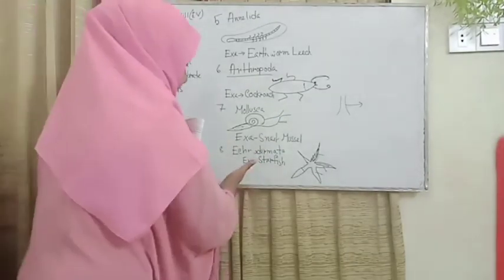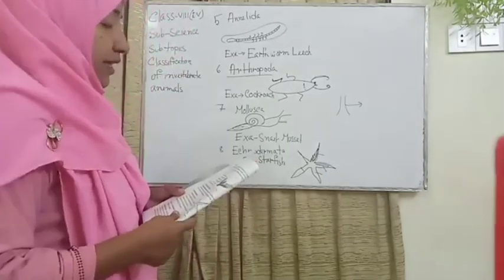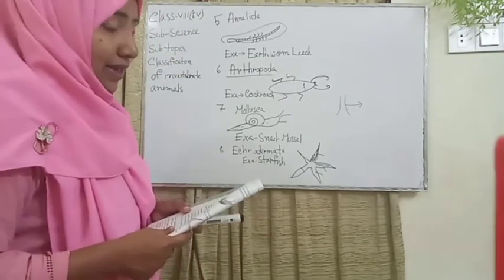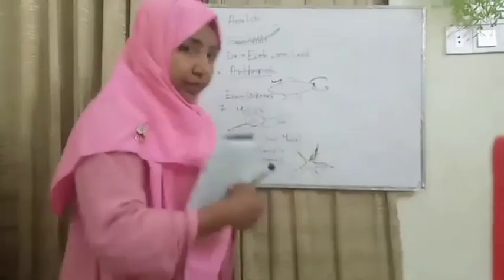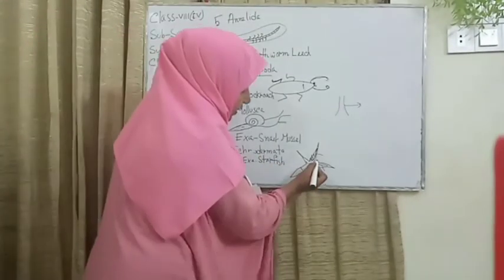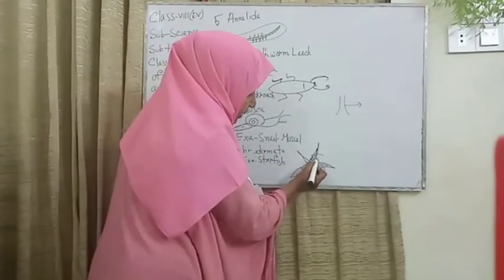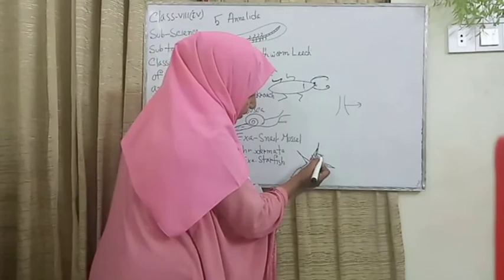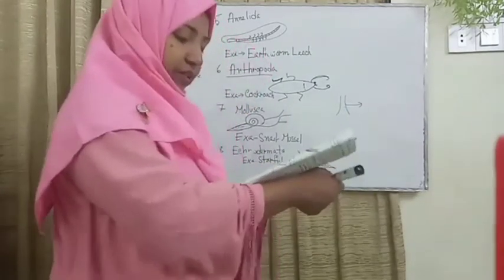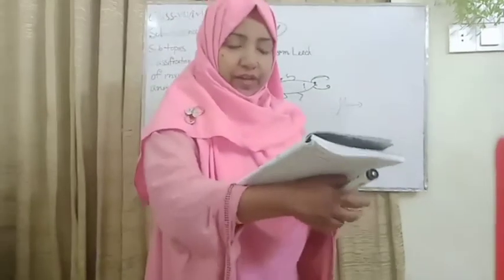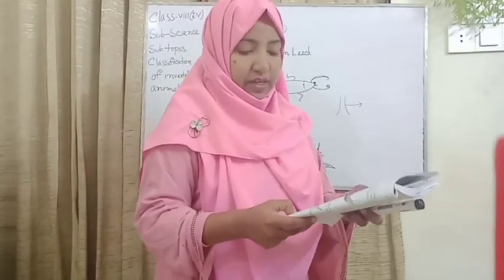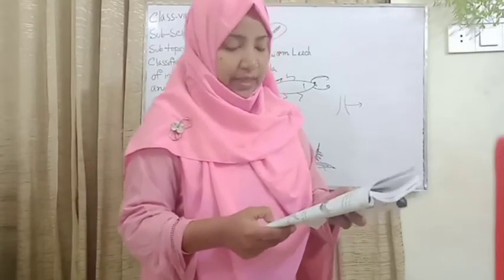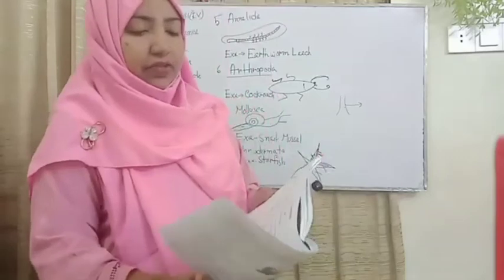The starfish, also known as Echinodermata, has tube feet — I just drew this structure showing the tube-feet shape. No distinct head; dorsal and ventral surface in adults. Examples: starfish and sea cucumber.